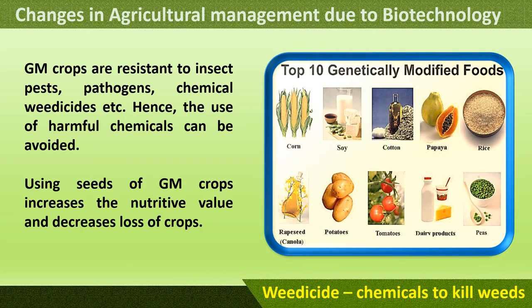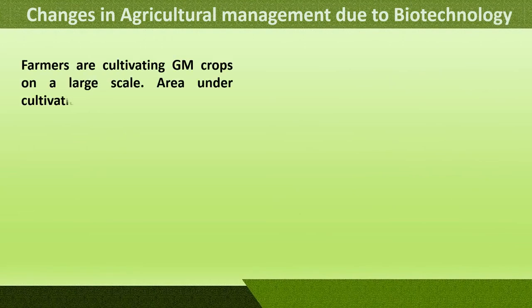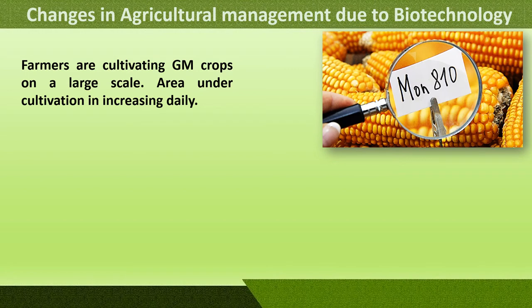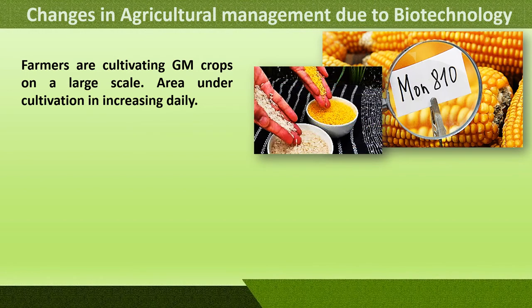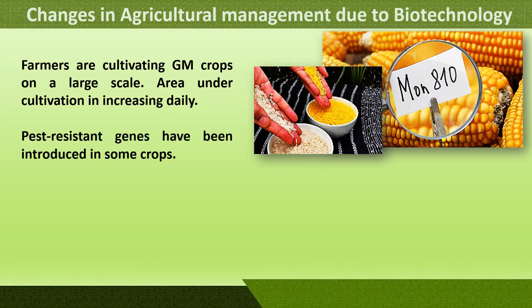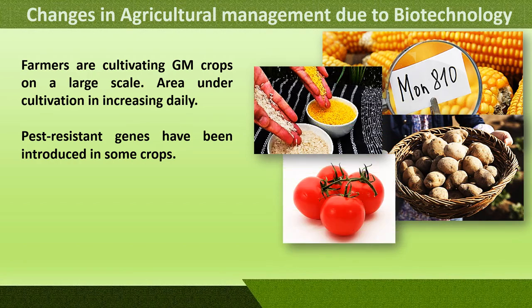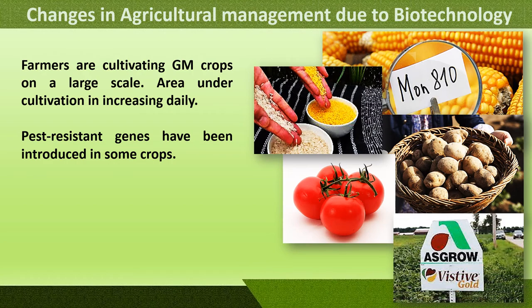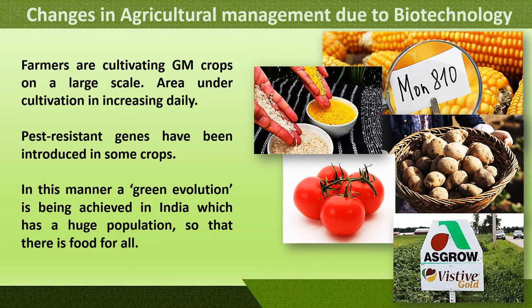Some of the top genetically modified crops include corn, cotton, papaya, rice, tomatoes, potatoes, soya, and dairy products — most things required for a nutritive balanced diet. Farmers are cultivating GM crops on a large scale, including MON 810 corn, golden rice, transgenic potatoes, and genetically grown tomatoes and soya. In this manner, a green revolution is being achieved in India to ensure food for its huge population.